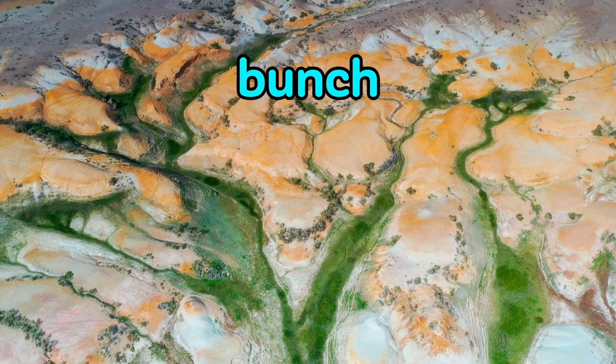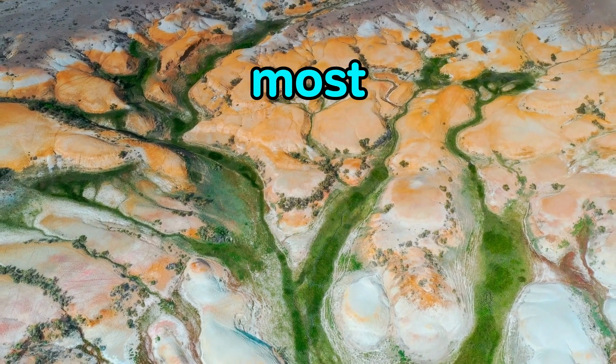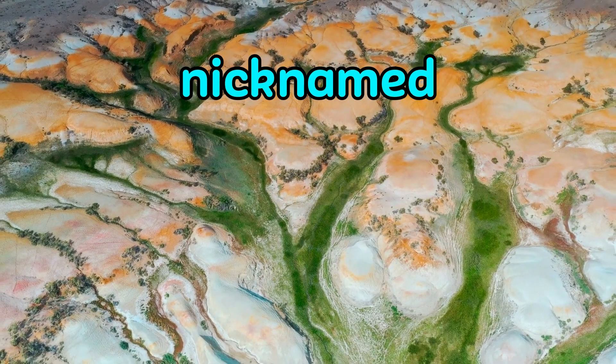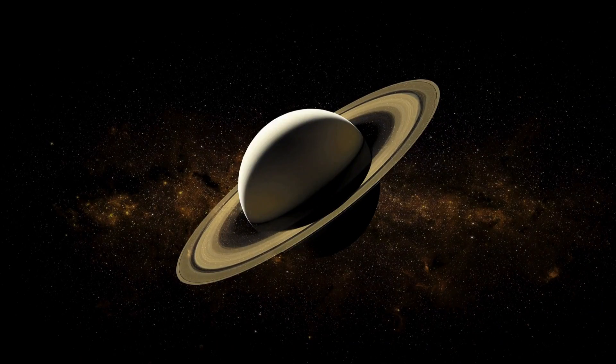J1407b, this may sound like a bunch of random letters mixed together, but in reality it is the name of one of the most fascinating planets astronomers have ever discovered. Nicknamed the Super Saturn, this bizarre planet has 37 rings surrounding it that span an astonishing 30 million miles across.